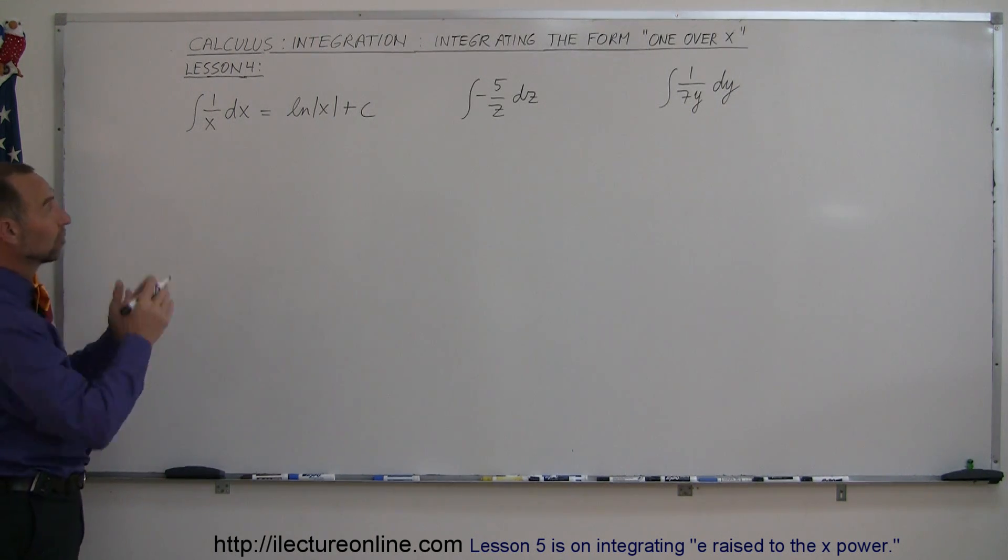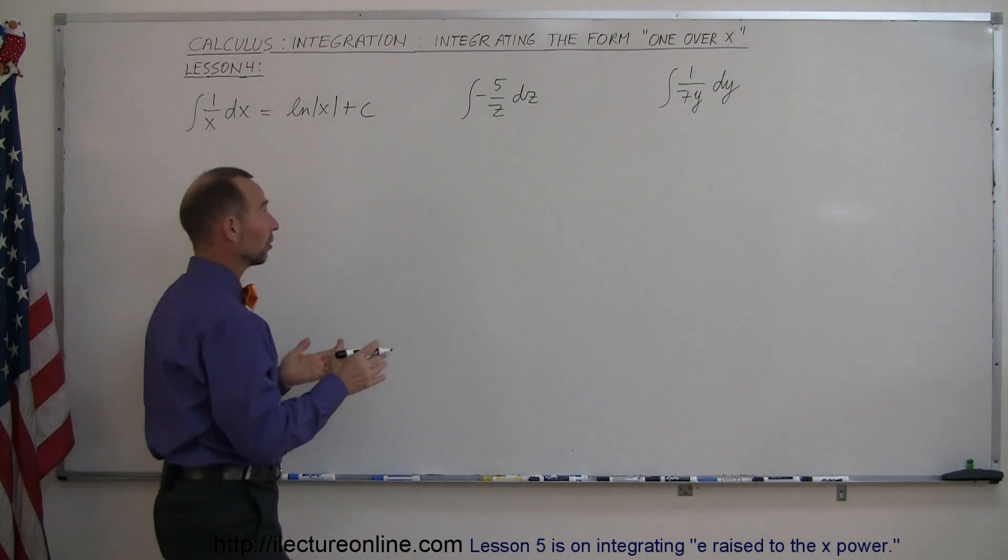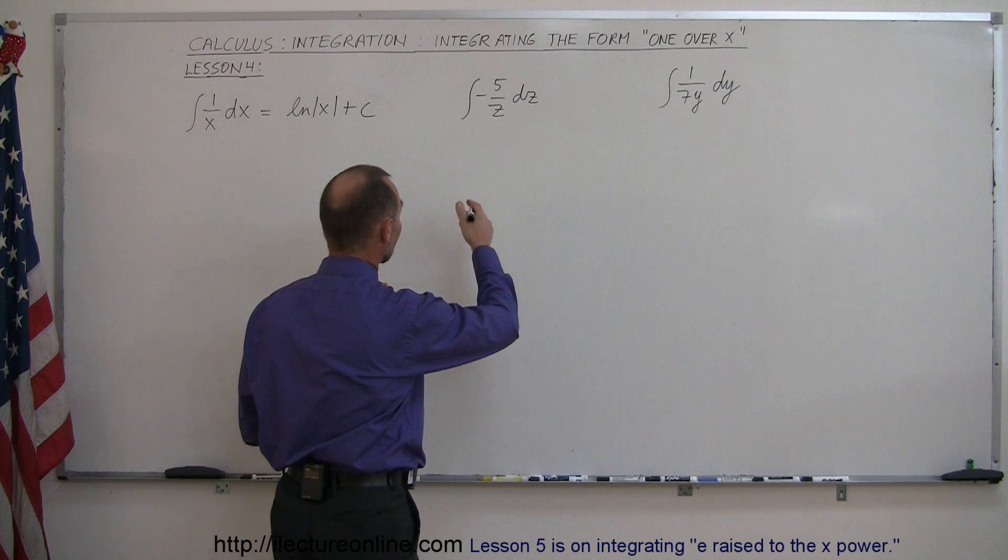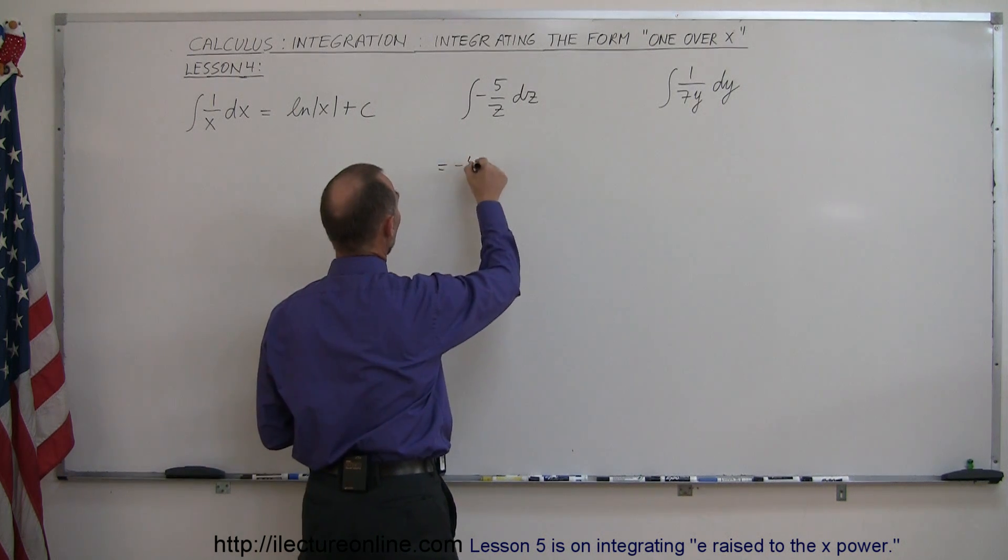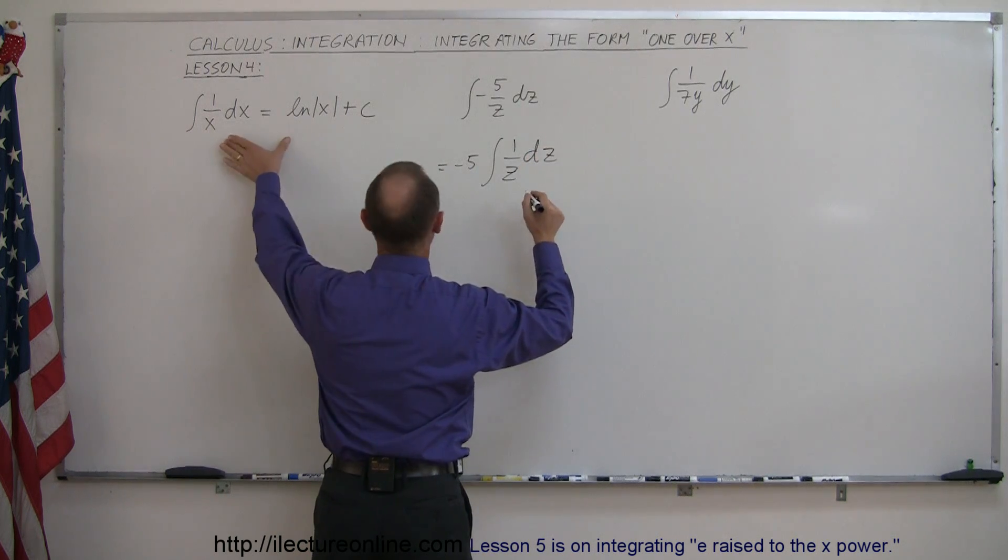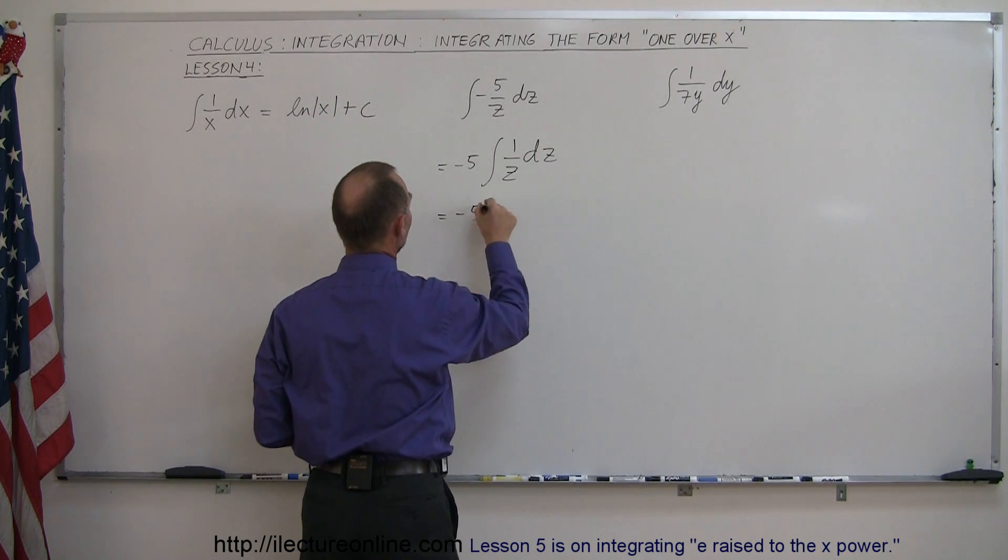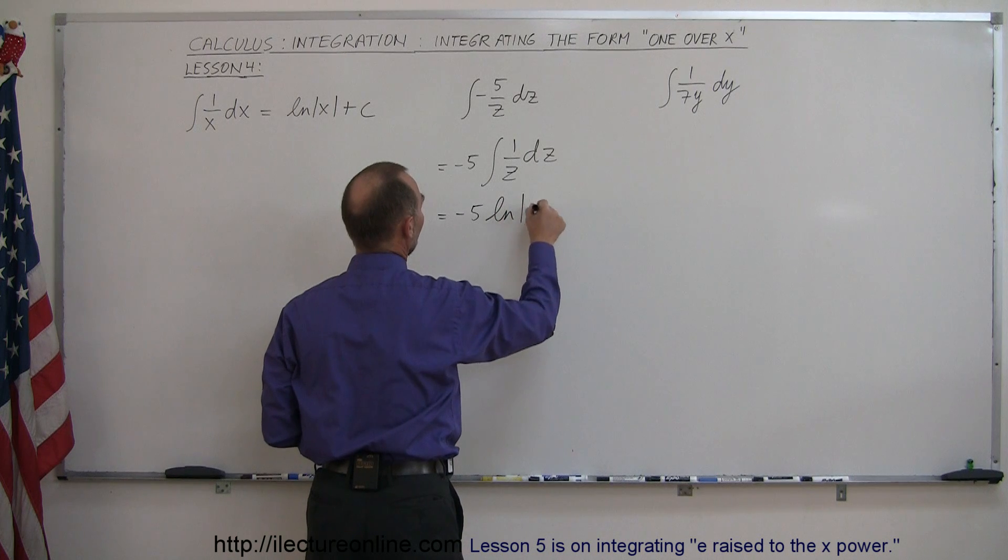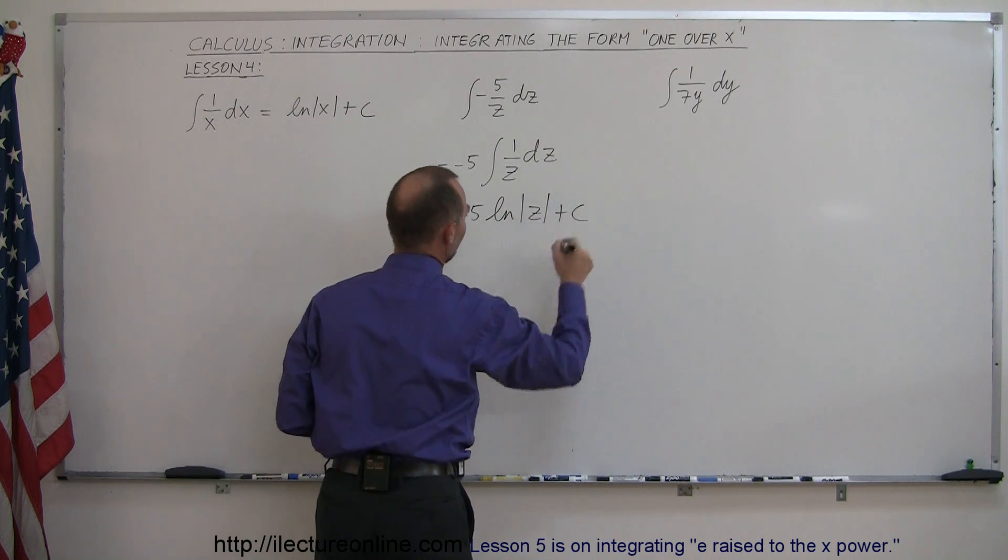let's illustrate that by using some examples. Well, first of all, remember that if there's a constant other than 1 there, we can move it outside the integral sign. So this is equal to minus 5 times the integral of 1 over z dz, and then we use the rule that we learned over here. So this is equal to minus 5 times the natural log of z plus a constant of integration.